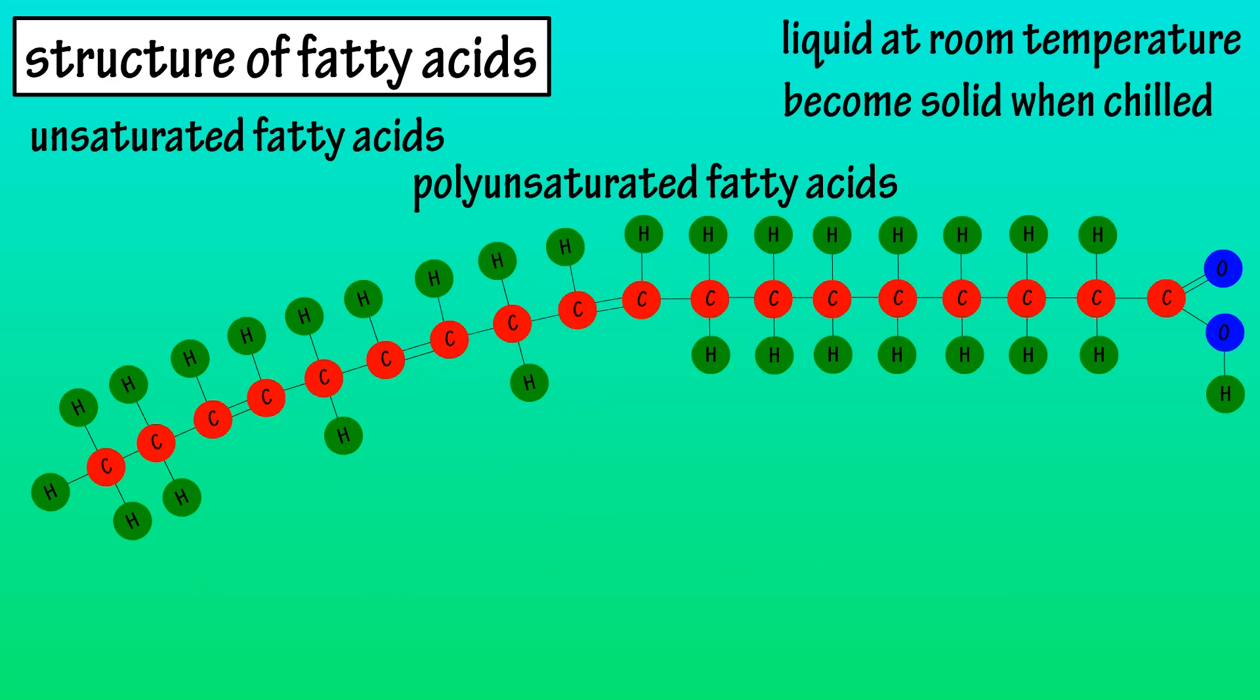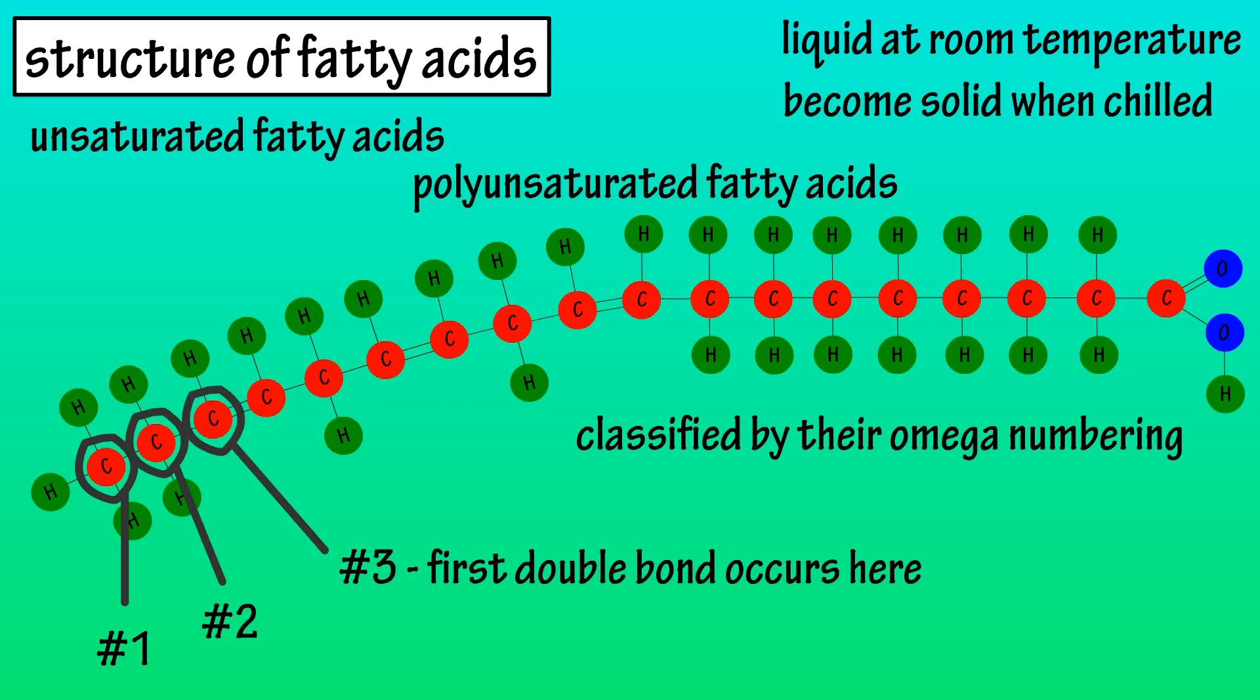Polyunsaturated fats are generally classified by their omega numbering. The omega carbon is the carbon atom at the end of the hydrocarbon chain. There are four types of omega fatty acids: 3, 6, 7, and 9. These are determined by where the location of the first double bonded carbon atom is located.